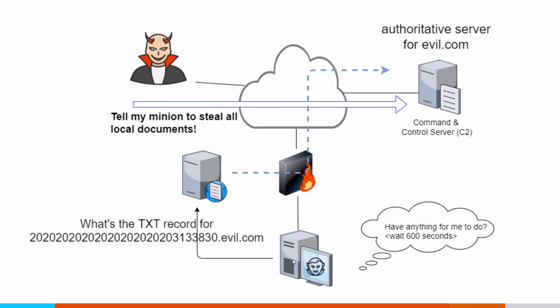What they do is program the compromised system such that any time it needs to check in to see if there are any marching orders, it does a DNS query for a resource record within that evil.com domain. That query gets sent to the local forwarder, and that forwarder is what actually talks to the command and control server directly. So there's no new traffic leaving the compromised system going directly to the internet. If you set up monitoring for additional internet traffic, you won't see anything — just additional DNS queries to your DNS server, which the system sends anyway. So this one can be kind of stealthy.